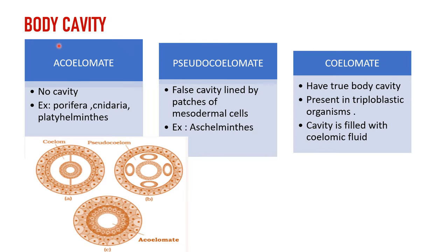Now we have body cavity. There are three types: acoelomate, pseudocoelomate, and coelomate. In acoelomates, there is no body cavity — 'a' means no. No body cavity is present. Examples are Porifera, Cnidaria, and Platyhelminthes.